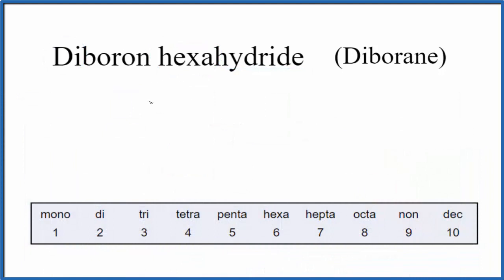So on the periodic table, boron, that's B, and then hydride, that's hydrogen.